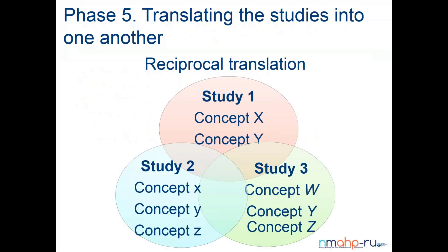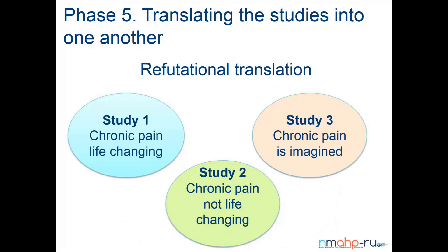Reciprocal translation means looking at individual studies to see what they're reporting and whether there are similarities. For example, in study one there's concept X, which is also in study two, but not in study three — which has new concepts Y and Z. You organize your studies, starting with one and seeing what's in it, then looking at the next to see whether concepts are similar or new, going backwards and forwards until you've mapped all the findings across all studies.